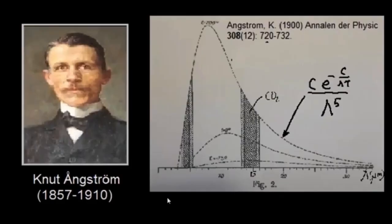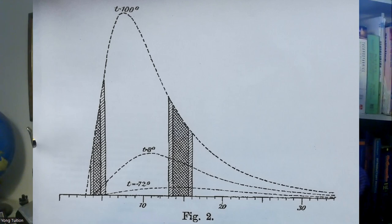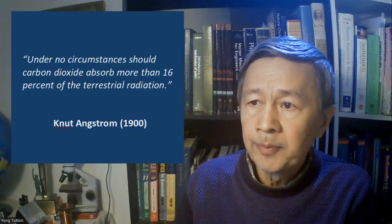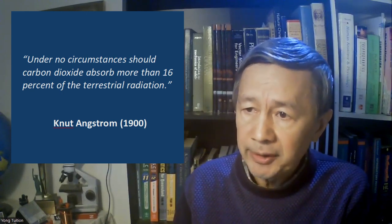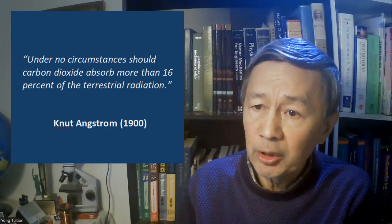In history, the first estimate of the proportion of infrared absorption by CO2 in the atmosphere was made by Clewes Armstrong in 1900, based on his own empirical formula for thermal radiation distribution, as Planck had not published his blackbody radiation theory yet. Here is a graph used by Armstrong Jr. for carbon dioxide. Notice that two CO2 absorption bands at 4.3 micron and 15 micron respectively were taken into account. According to this paper by Armstrong, quote: 'Under no circumstances should carbon dioxide absorb more than 16% of the terrestrial radiation.'